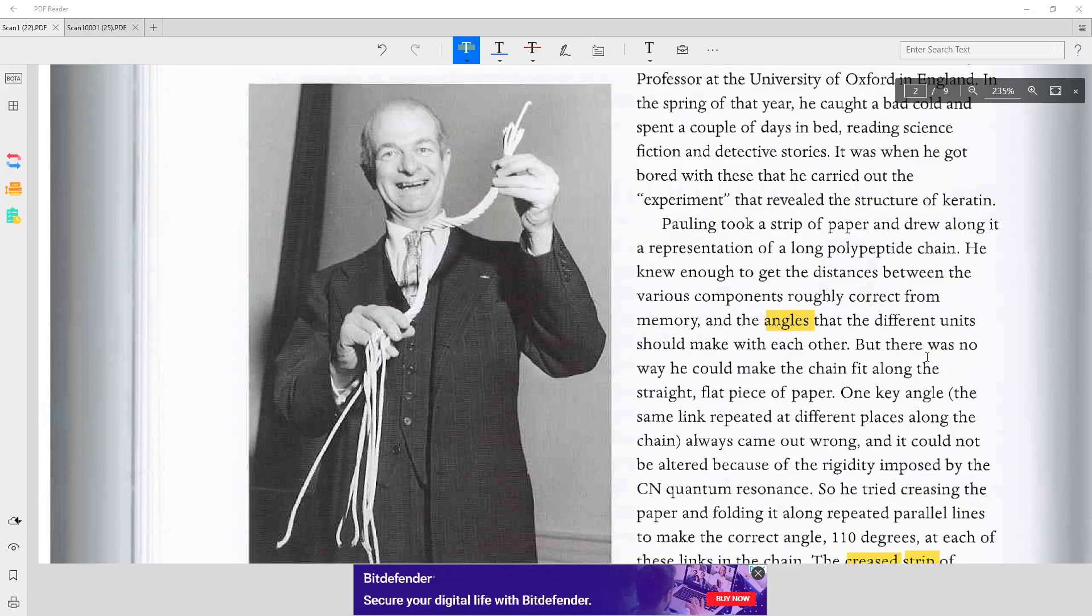Pauling took a strip of paper and drew along it a representation of a long polypeptide chain. He knew enough to get the distances between the various components roughly correct from memory, and the angles that the different units should make with each other.